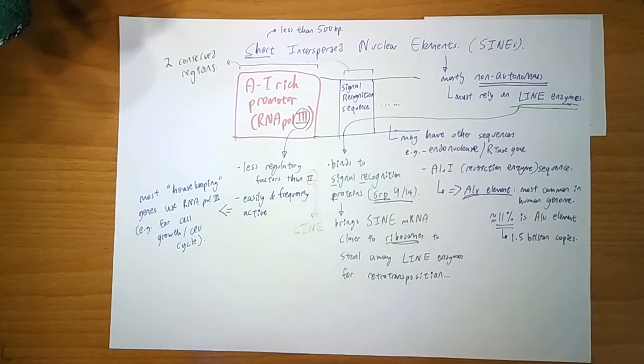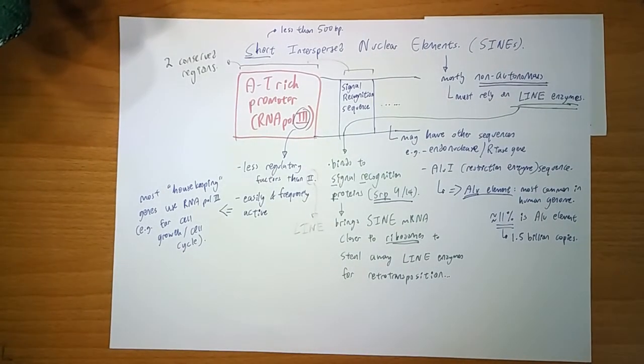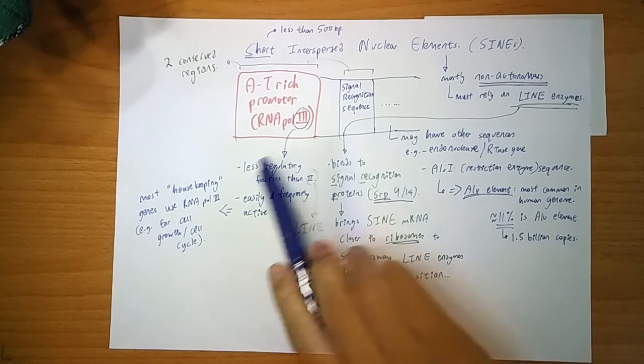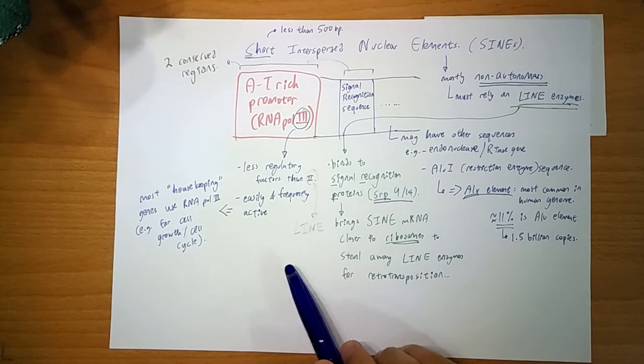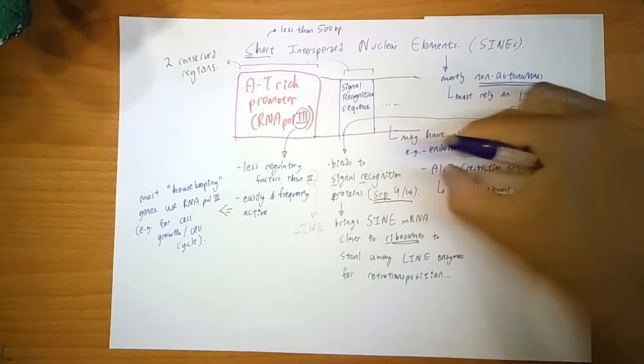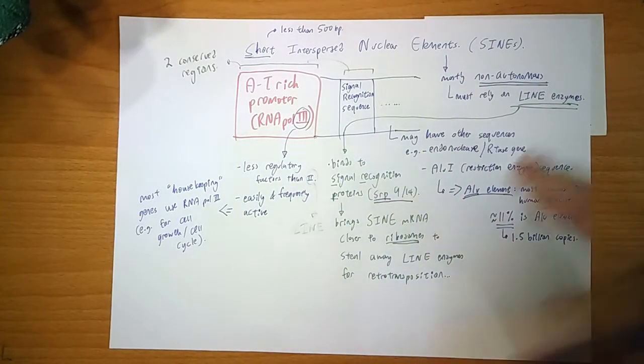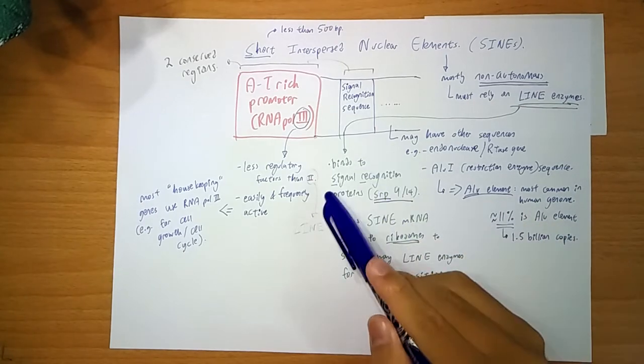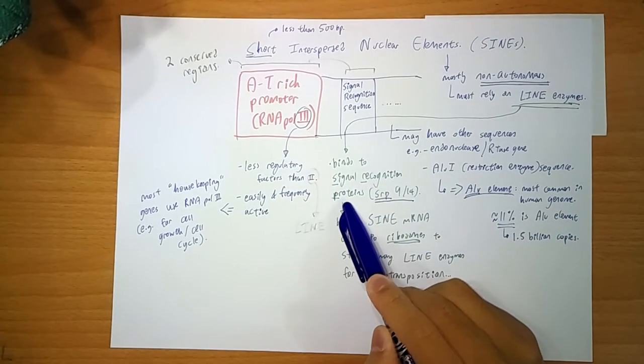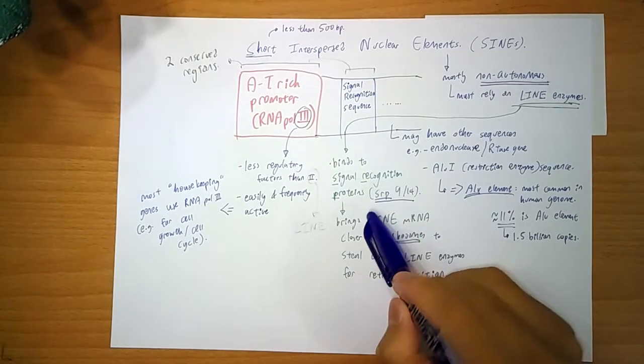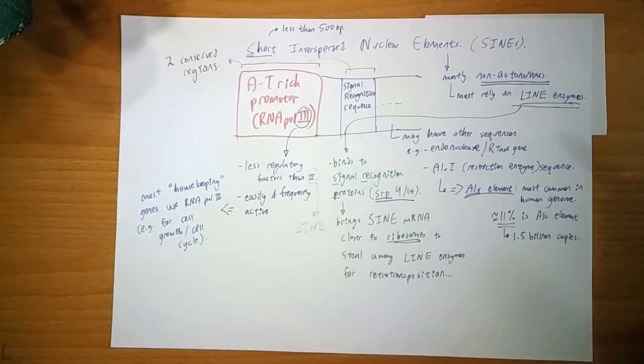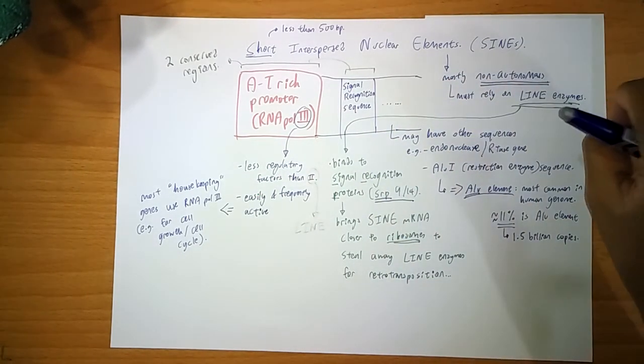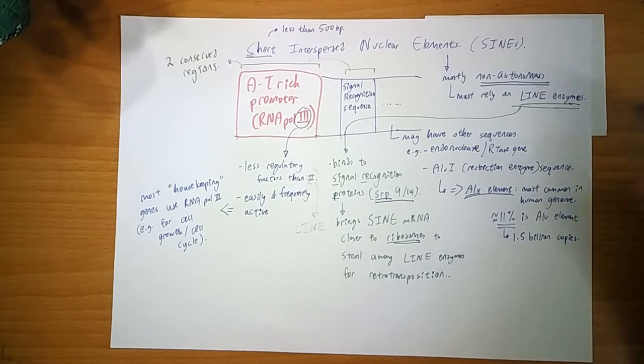And this region is a signal recognition sequence. It's another conserved region. So one thing special about this region is that when you produce the mRNA, it goes into the cytoplasm. And you have signal recognition proteins here that will bind onto the mRNA. So SRP 9 or 14 will bind the mRNA and you'll bring it to the ribosomes. And why does it need to do that?